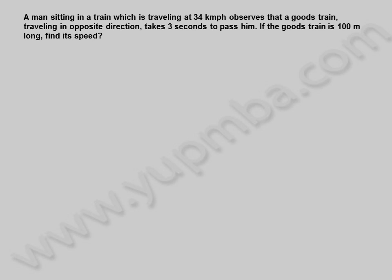A man sitting in a train which is traveling at 34 km per hour observes that a goods train, traveling in opposite direction, takes 3 seconds to pass him. If the goods train is 100 meters long, find its speed.